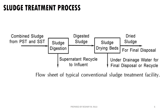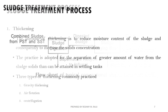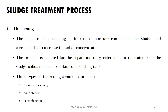Usually, we use the sludge from the Primary Sedimentation Tank (PST) and Secondary Sedimentation Tank (SST). We also use sludge digestion. We use sludge drying beds for the digesters, and drying beds for the final disposal. For the final disposal, we can also use the dried sludge.